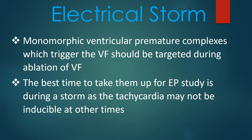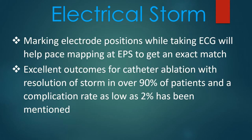Monomorphic ventricular premature complexes which trigger ventricular fibrillation should be targeted during ablation of VF. The best time for EP study is during a storm, as the tachycardia may not be inducible at other times. Marking electrode positions while taking ECG will help pace mapping at EP study to get an exact match. Excellent outcomes for catheter ablation with resolution of storm in over 90% of patients and a complication rate as low as 2% have been mentioned.